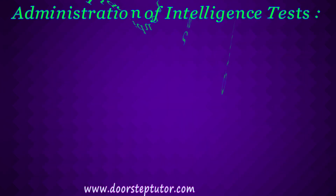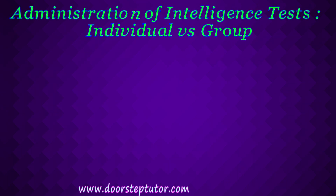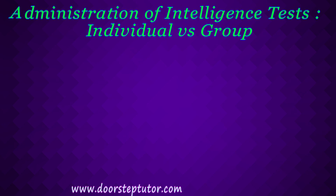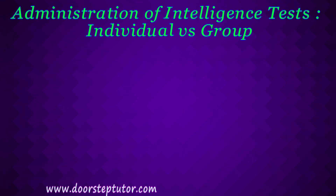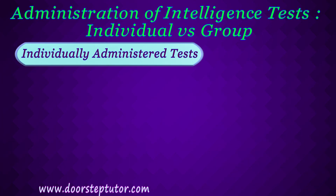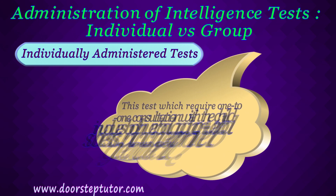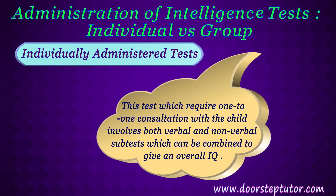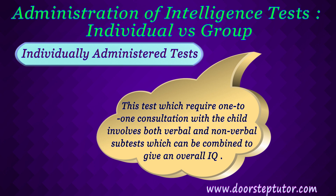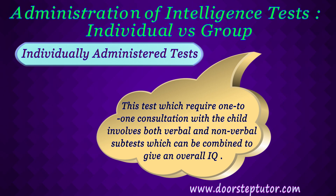Now let us understand the administration of intelligence tests. Psychological tests are constructed for testing either one individual or a group of individuals at a time. Likewise, there are two major types of intelligence tests: those administered to individuals and those administered to groups. Individually administered tests require one-to-one consultation with the child. This test involves various verbal and non-verbal subtests which can be combined to give an overall IQ, but which also provide valuable separate subtest scores and measures based on the behavioral responses of the child through the test items.